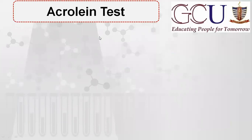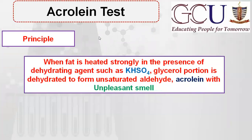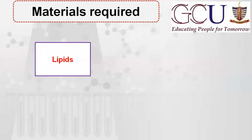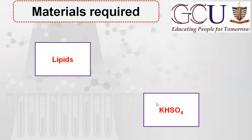Next is the acrolein test. The principle of the acrolein test is that when you heat a triglyceride with KHSO₄, it decomposes back into glycerol and fatty acids. The glycerol then undergoes dehydration to form an unsaturated aldehyde called acrolein, which has an unpleasant smell. The materials required are the lipid sample and KHSO₄.